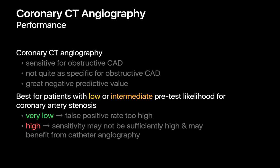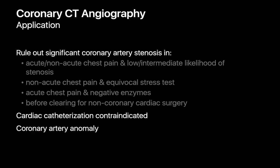On the other hand, coronary CTA is not an ideal test for folks with a very low pre-test likelihood of coronary artery disease because of its false positive rate, nor for folks with high pre-test likelihood because the sensitivity may not be high enough and many of these people will probably need catheter angiography in the end. The applications of coronary CTA include ruling out significant coronary artery stenosis in patients with chest pain and low or intermediate likelihood of stenosis, patients with non-acute chest pain and equivocal stress tests, patients with acute chest pain and negative cardiac enzymes, patients requiring clearance for non-coronary cardiac surgery, patients for whom cardiac cath is contraindicated, and patients with coronary artery anomalies.